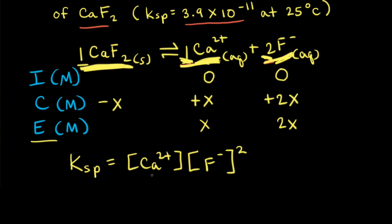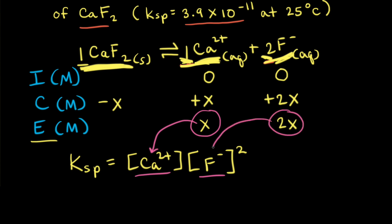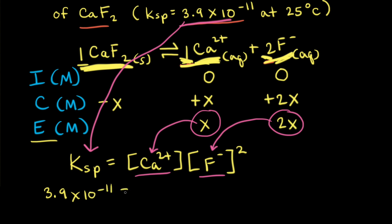The concentration of ions in our Ksp expression are equilibrium concentrations. Therefore, we can plug in X for the equilibrium concentration of calcium 2+ and 2X for the equilibrium concentration of fluoride anions. We can also plug in the Ksp value, giving us 3.9 times 10 to the negative 11th is equal to X times (2X) squared.